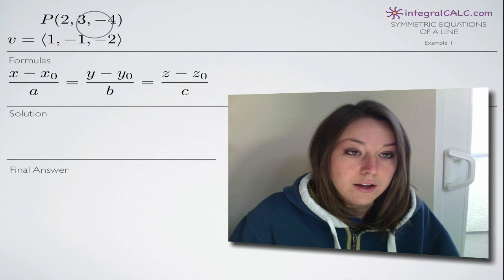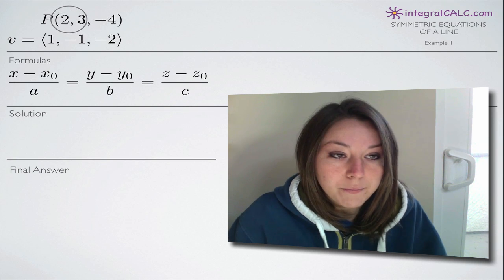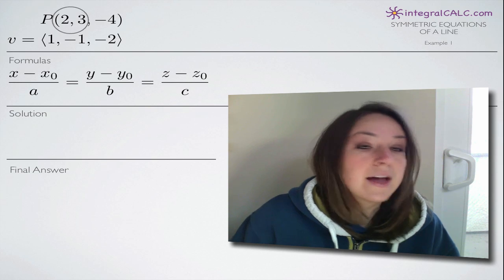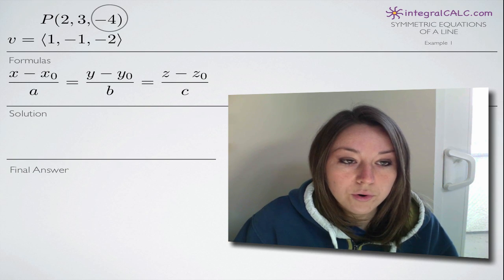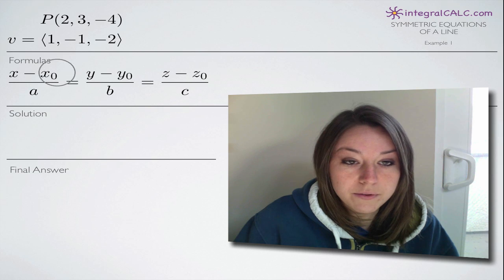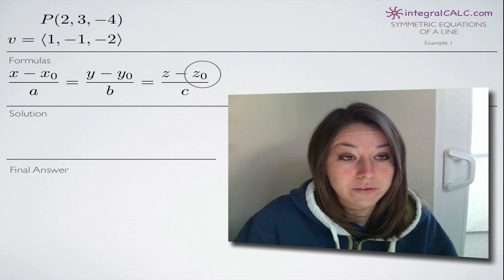Our problem gives us the point P and the vector v. Inside point P, the values 2, 3, and negative 4 represent x sub zero, y sub zero, and z sub zero respectively.